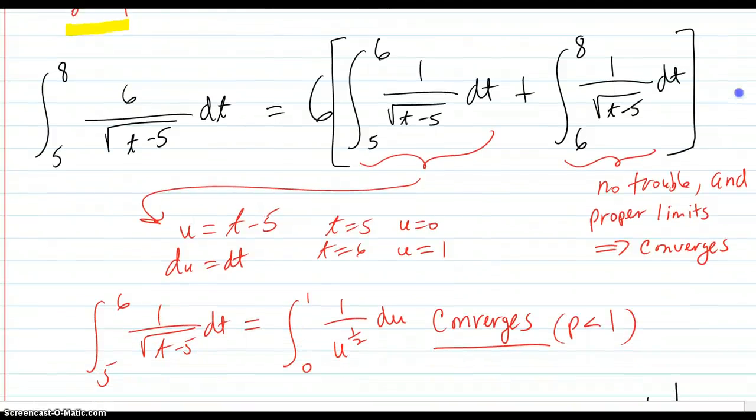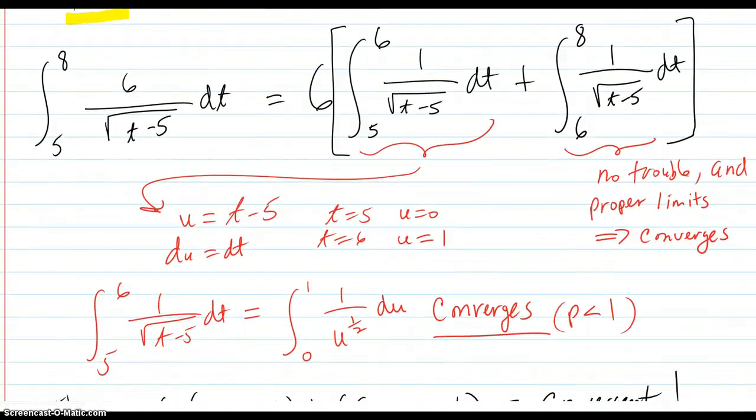So what we do here, and there's different ways you can do this, but what I did was I factored out this 6 over to here. Then I split up 5 to 8 to 5 to 6, because that's one unit difference, and I'm going to substitute this to be 0 to 1. And then the remainder, 6 to 8.